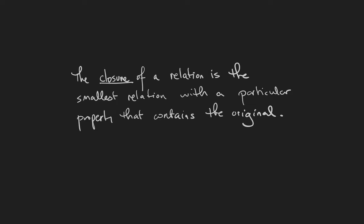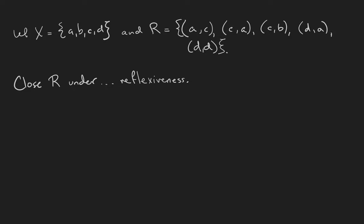The closure of a relation is the smallest relation with a particular property that contains the original. For example, let X be the set {A, B, C, D} and R be the relation that relates A and C to each other, C to B, D to A, and D to itself. We're going to close R under the property of reflexiveness.